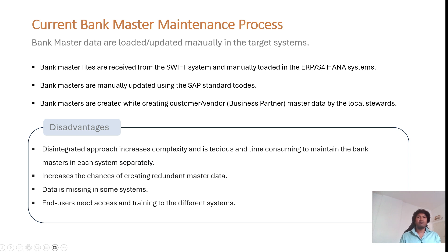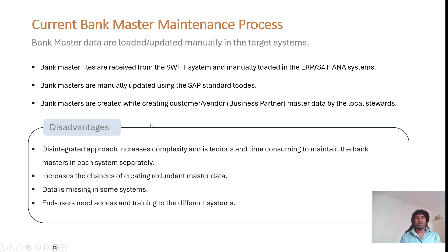The current bank master maintenance process involves bank master files usually received from third-party systems like SWIFT and then manually loaded into ERP S4 systems. Bank masters are also manually updated using standard T-codes, or created while creating customer or vendor master data by the local stores. When a local store creates a customer or vendor using T-code BP, the corresponding bank master data is also created at the back end.